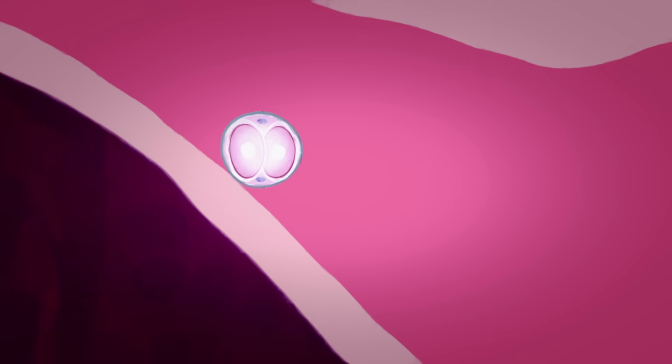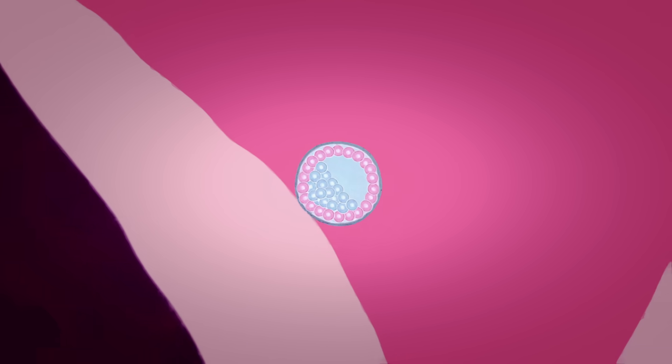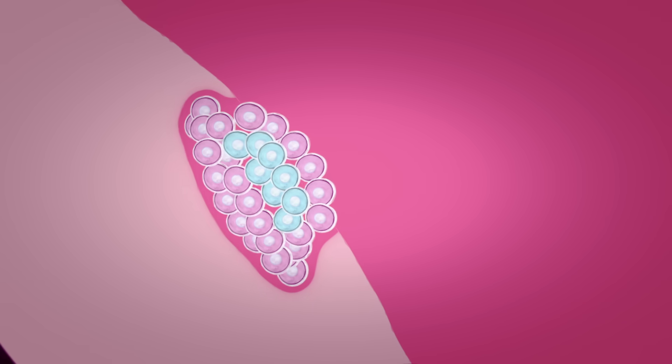Upon successful fertilization, the zygote immediately begins developing into an embryo and takes about three days to reach the uterus. There, it requires another three or so days to implant firmly into the endometrium, the inner lining of the uterus.